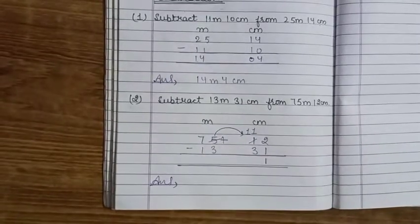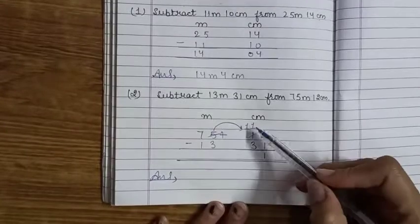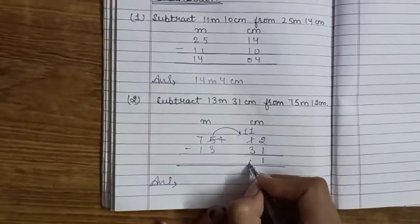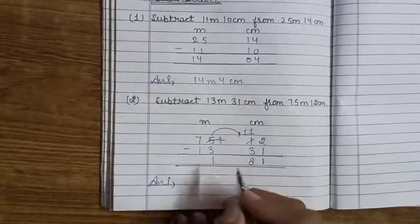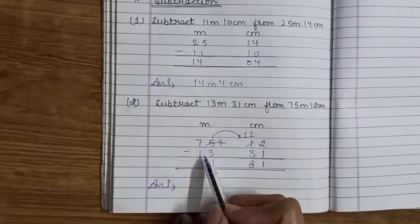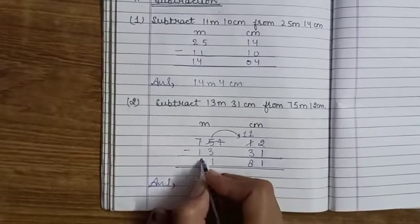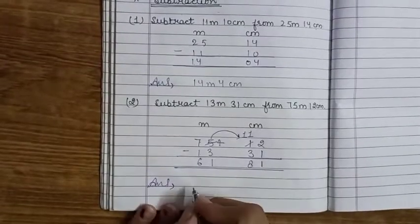Now 11 minus 3 is equals to 8, aur yahan per 4 minus 3 is equals to 1, and 7 minus 1 is equals to 6. So the final answer is 61 meter 81 cm.